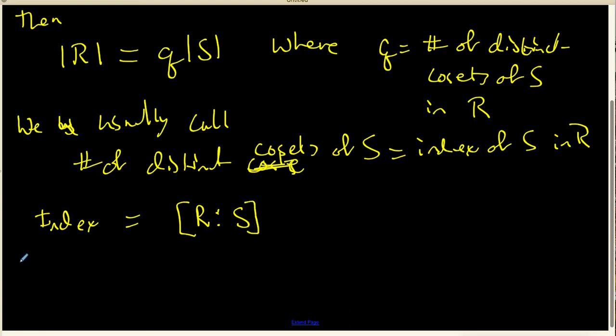So Lagrange's theorem can be restated as: the number of things in R equals the index times the number of things in S.